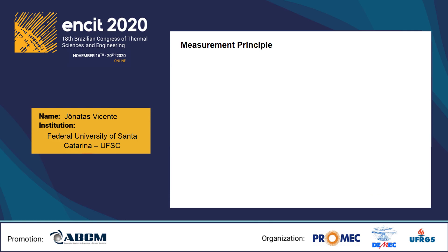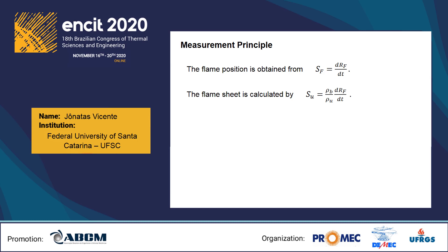For the transient outwardly expanding flame, the speed of the moving flame front is measured with respect to a coordinate system fixed in the center of the spherical reactor. Named flame displacement speed Sf, it is determined from the time recording of the flame position Rfs by this expression. After some assumptions and correlations, the expression to obtain the flame sheet speed is presented. The speed of the outwardly propagating spherical flame is affected by flame stretch, and the flame stretch rate K is defined by this correlation.